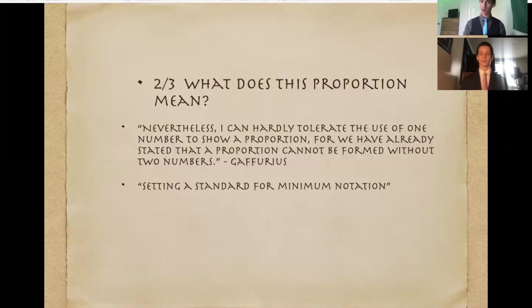As was discussed earlier, it's the idea of if there was a note or an explanation on what you should be doing in a text or an explanatory text, it means that someone was doing it the wrong way. And so the composer or author felt the need to correct it. So that's what brings us to this next quote: Nevertheless, I can hardly tolerate the use of one number to show a proportion, but we've already stated that a proportion cannot be formed without two numbers. So basically what composers were doing in this case, from 12/8 to 4/4, they just put three or they would just put two. And those numbers mean two very different things. So you have to have two numbers to explain what's actually going on.